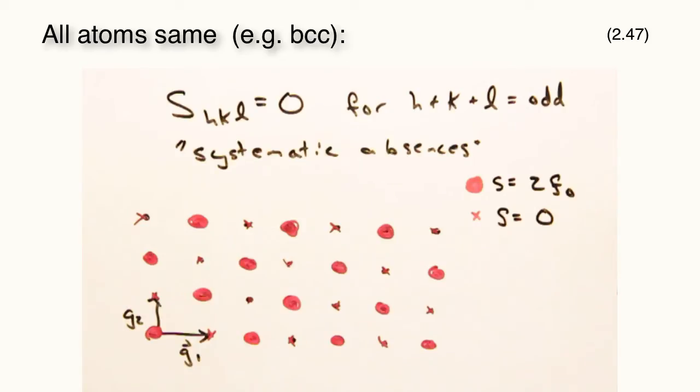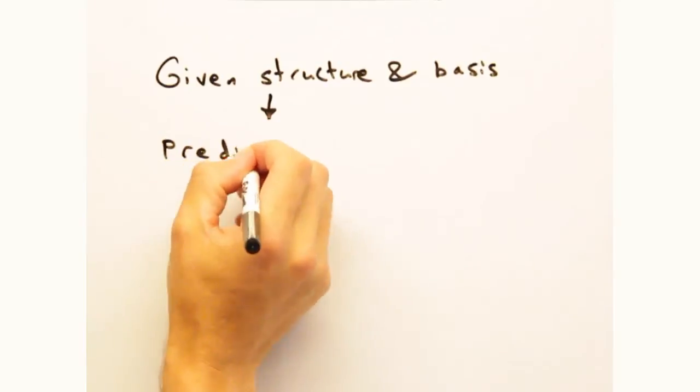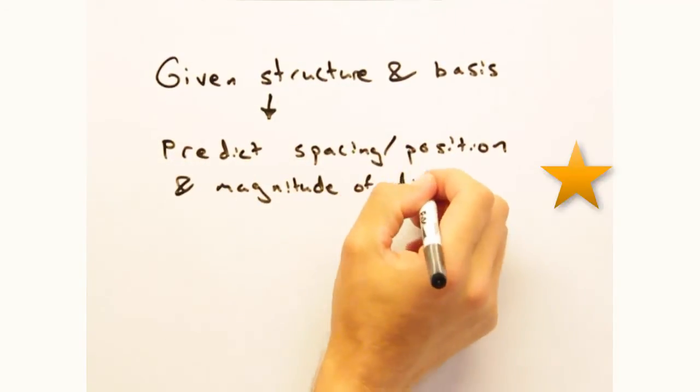So thus based on a given structure and basis, we can predict the spacing and the relative magnitude of the diffraction intensity. Sounds pretty awesome.